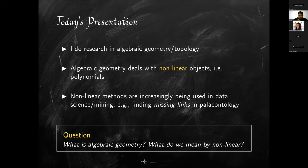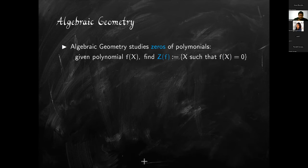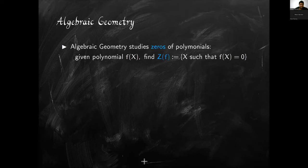So far I've been vague — I haven't told you precisely what algebraic geometry studies or what I mean when I say non-linear. Let me clarify. Algebraic geometry studies the zeros of polynomials: given a polynomial f, which can be a function of more than one variable, what are the points at which f evaluates to zero? The set of such points is denoted Z(f), and algebraic geometry basically studies Z(f) for various polynomials.